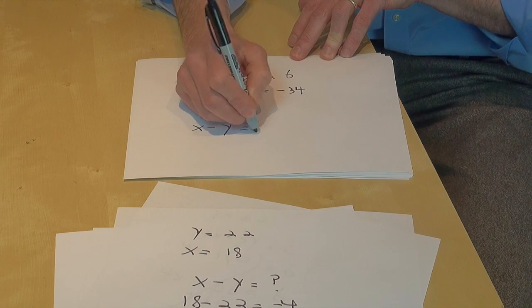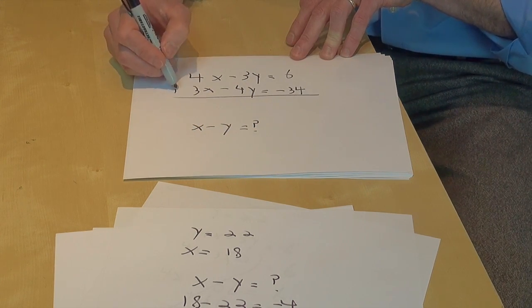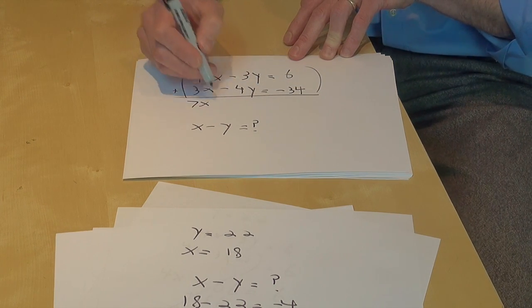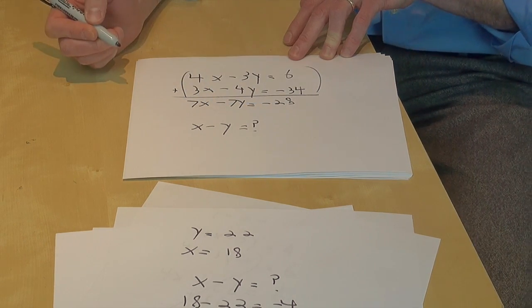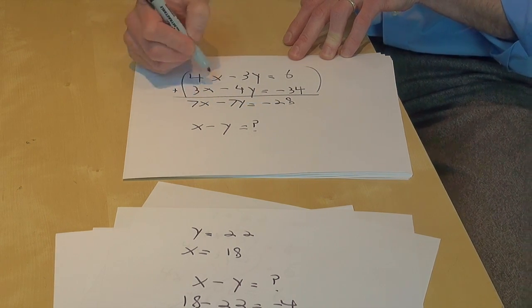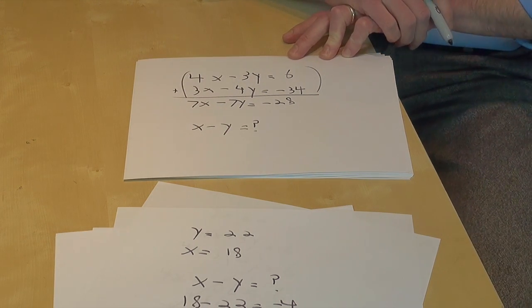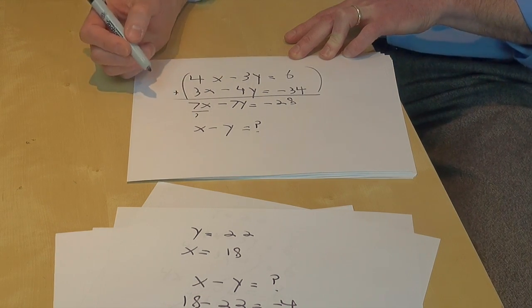Our original equations: 4x minus 3y equals 6, and 3x minus 4y equals minus 34. What are we trying to find? x minus y. Here's the trick: just for fun, if I added these equations, 7x minus 7y equals minus 28.